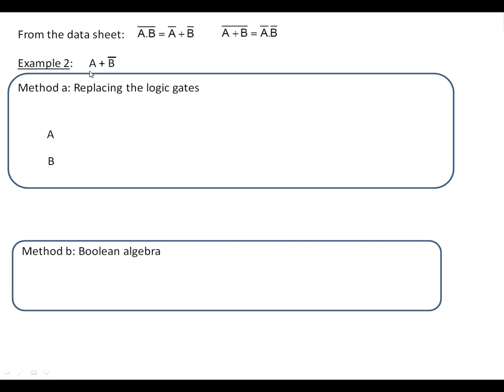For example two is A or NOT B. So again what we need to do: let's get the NOT B and then let's get our OR gate from the previous slide.